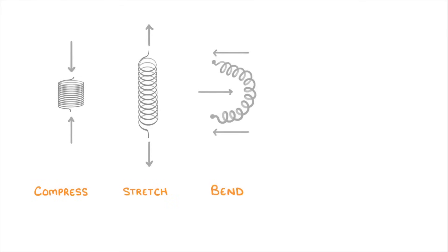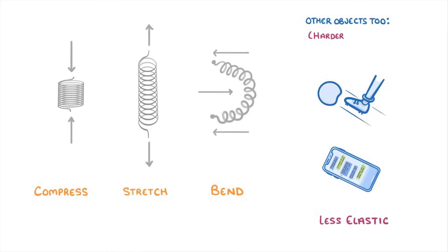When you apply a force to an object, you could cause it to compress, to stretch, or to bend. This is easiest to see with a spring, but the same concept applies to other objects too, like a ball or a phone. These objects are just less elastic, so it's harder to notice any kind of change in shape.